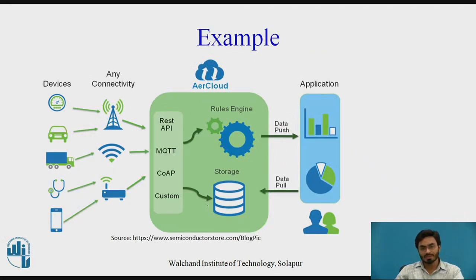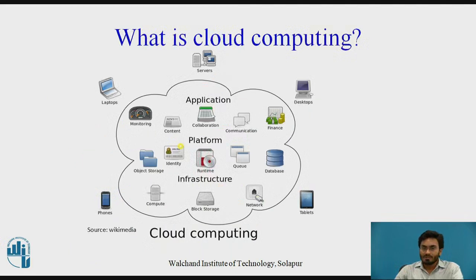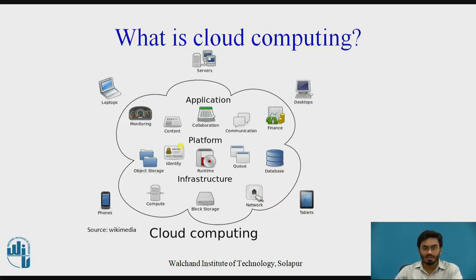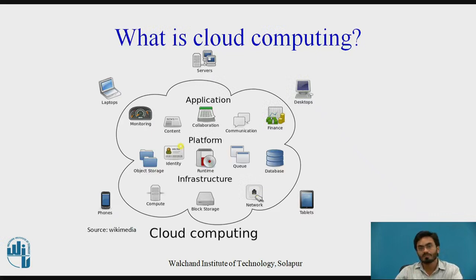These three services — application, platform, and infrastructure layers of cloud computing — are actually provided as a service. They are known as Application as a Service, Platform as a Service, and Infrastructure as a Service for a cloud-based architecture, whether you are talking about a web service or even an IoT-based system.